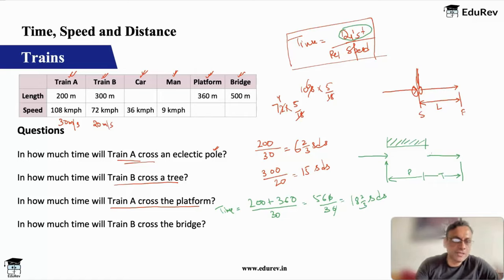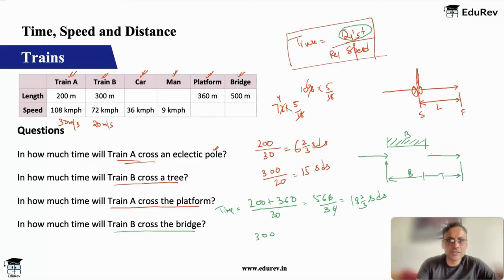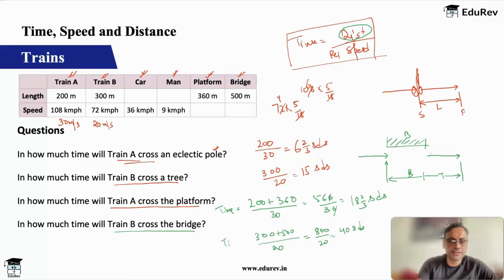Fourth question: how much time will train B take to cross the bridge? Same concept — distance is train B (300 meters) plus bridge (500 meters) = 800 meters. Train B's speed is 20 meters per second. Time = 800 ÷ 20 = 40 seconds.